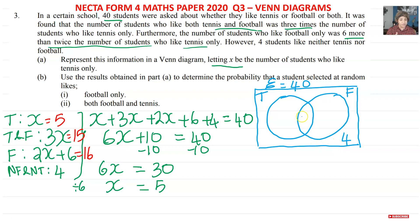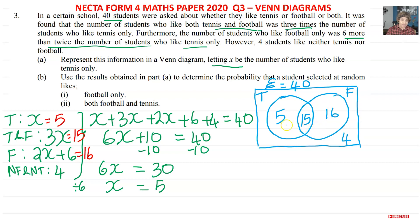The students who like both tennis and football — that's 15 — go in the intersection area. The 5 who like tennis only cannot be in the intersection; they go in the tennis circle only. And 16 who like football only go in the football circle only, outside the intersection. Check: 5 + 15 = 20, 16 + 4 = 20, and 20 + 20 = 40.